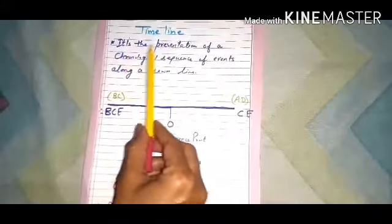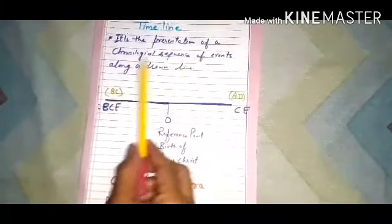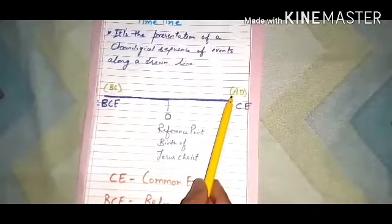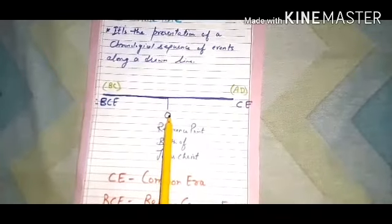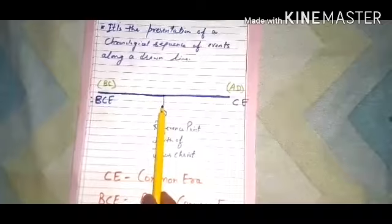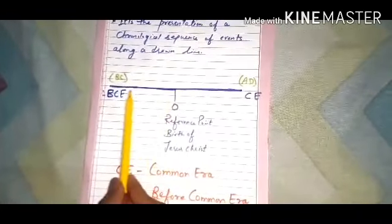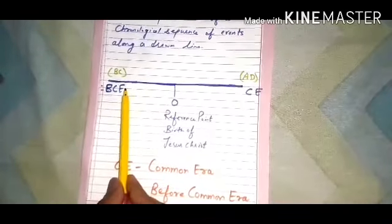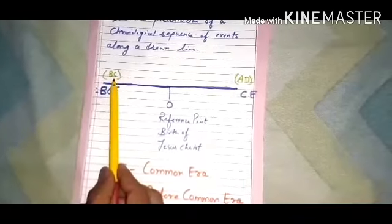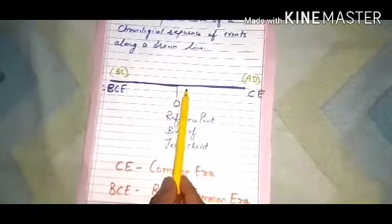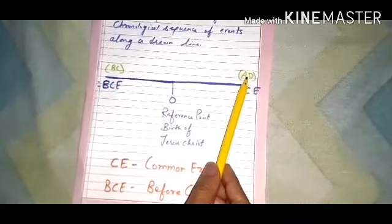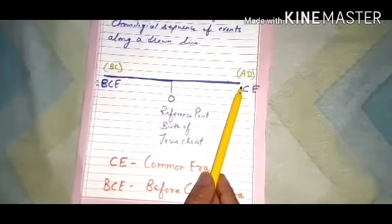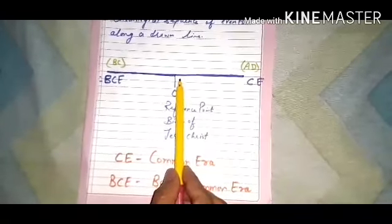Now, timeline. A timeline is the presentation of a chronological sequence of events along a drawn line. BC and AD are terms used to measure time. The birth of Jesus Christ is taken as a reference point. All events that happened before the birth of Jesus are counted backward and are denoted by BC. All dates or events after the birth of Jesus are denoted by AD — which means Anno Domini, that is the year of the Lord — and these are counted in forward counting: 1, 2, 3, 4, and so on.